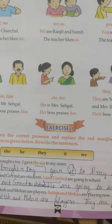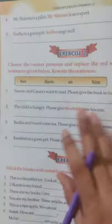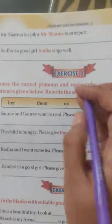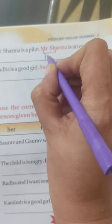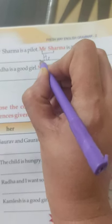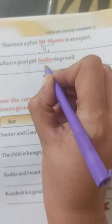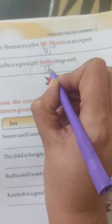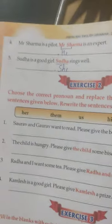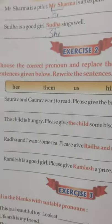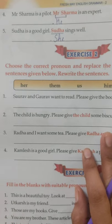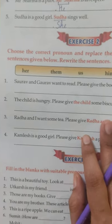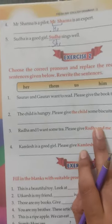You need to fill these types of exercises in your book. I will sort out only one more here. For Mr. Sharma — a male — we will use the word 'he'. For Sudha — a girl, a female — we will use the word 'she'. Mr. Sharma is a male, so we use 'he'. And for Sudha, a girl, we use 'she'.